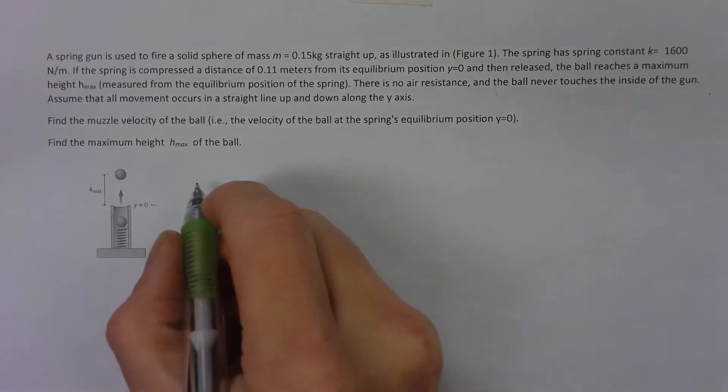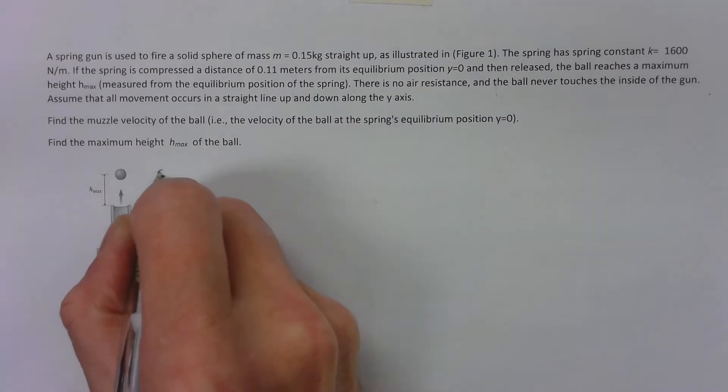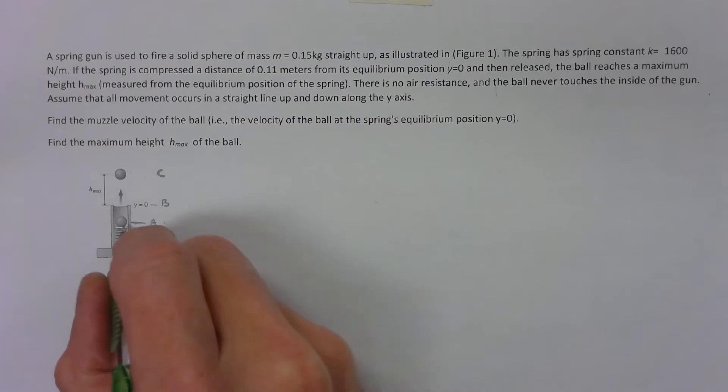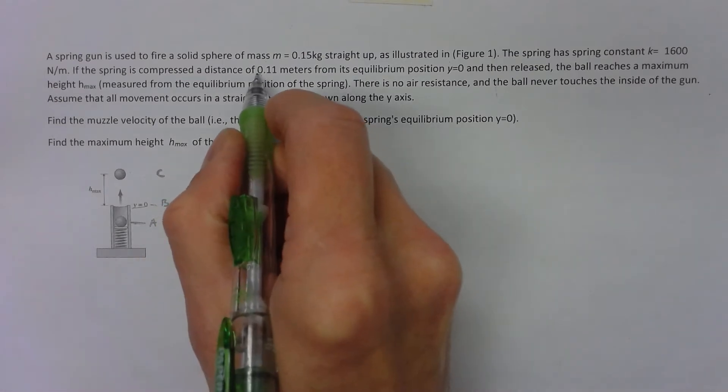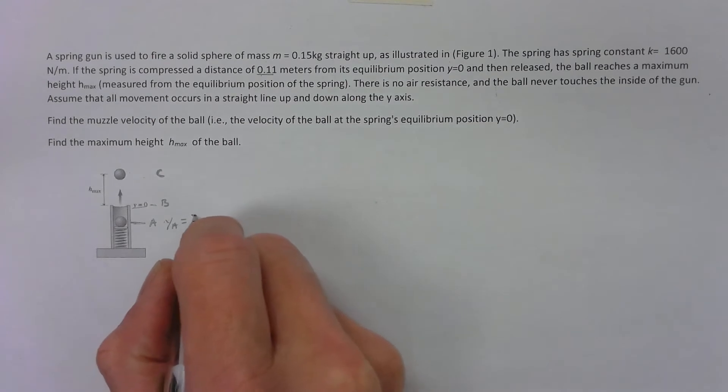We got three places - I'm going to label this location a, this location b, and this location c, just to differentiate between the three. This is where I have a certain amount of energy. Here, this y at a, that is 0.11 meters down, so it's negative 0.11 meters.